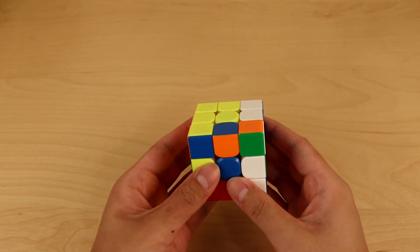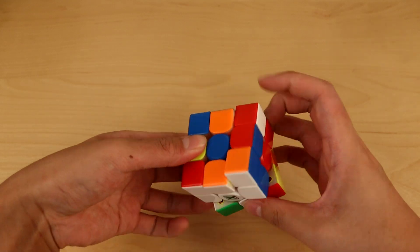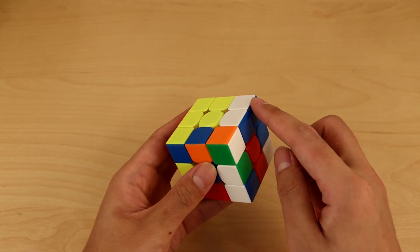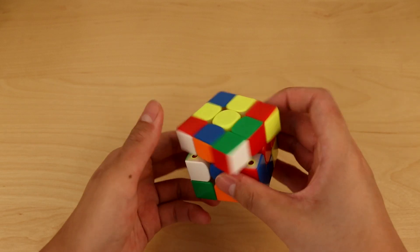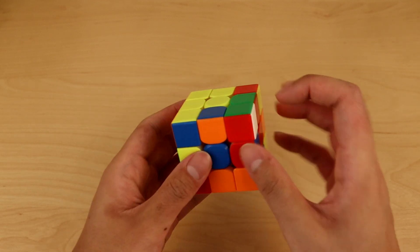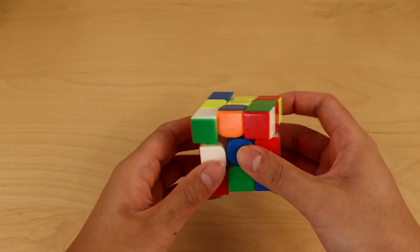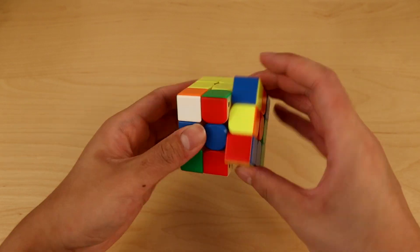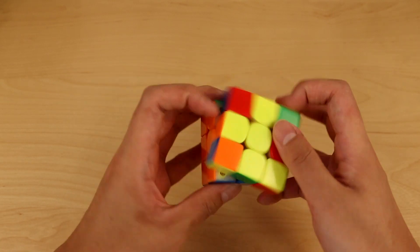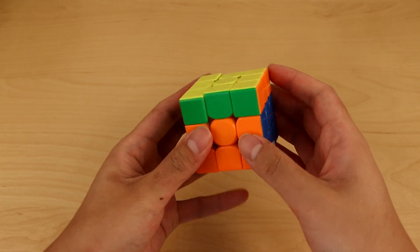This shows the importance of planning ahead. You could just do a four-move cross, but if you see a solved corner, why not insert the edge first? And if you see a free corner, why not insert that corner as well? This double X-cross is what allowed Max Park to get such a fast time with this scramble.